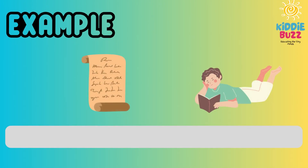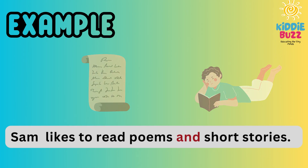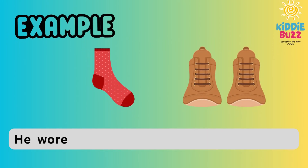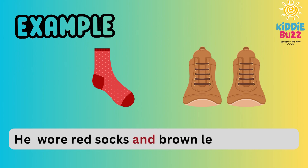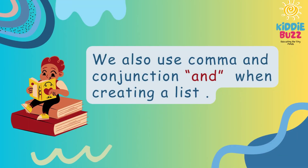Sam likes to read poems and short stories. Instead of saying 'Sam likes to read poems' and 'Sam likes to read short stories' separately, we connect the sentence using AND. Another example: 'He wore red socks and brown leather shoes.' The conjunction used is AND.